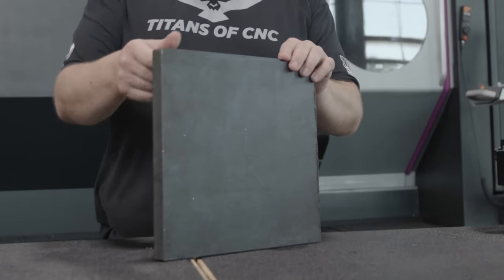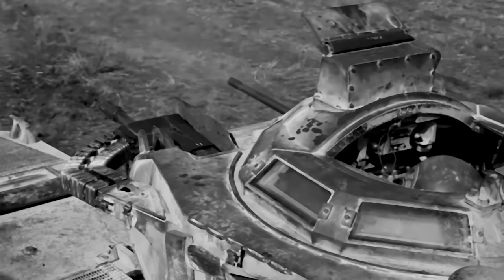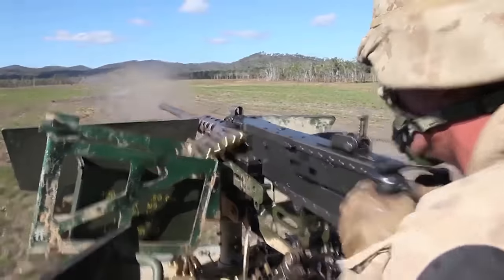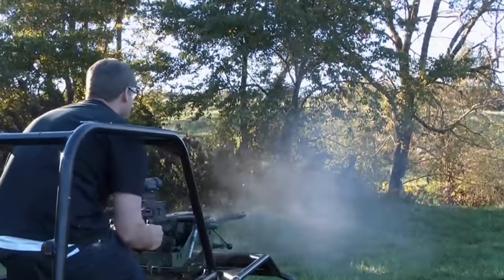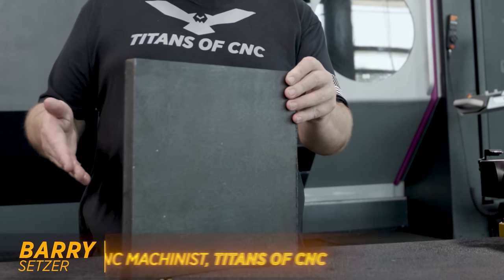This is AR-500 abrasion resistant steel. Now this stuff's used in a lot of armoring applications for things like tanks, mining equipment, and armored personnel carriers. Most of the time when they're using this stuff as armor, it's only like a quarter inch or a half inch thick.